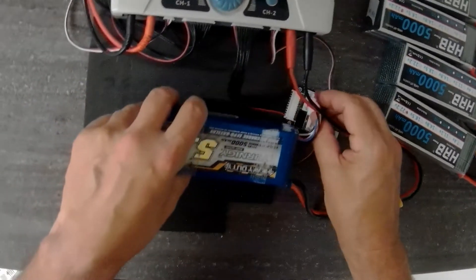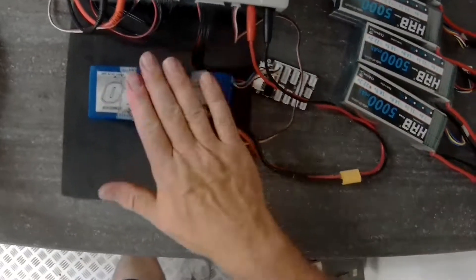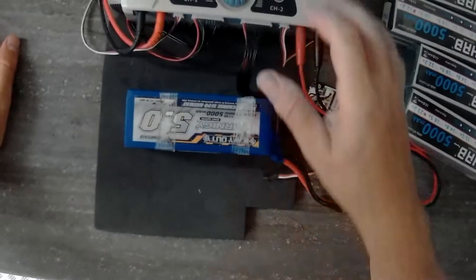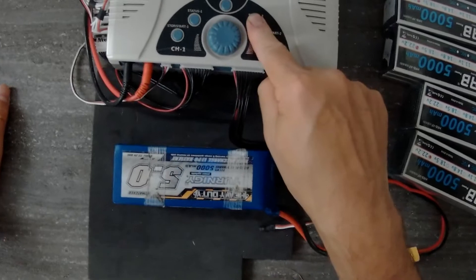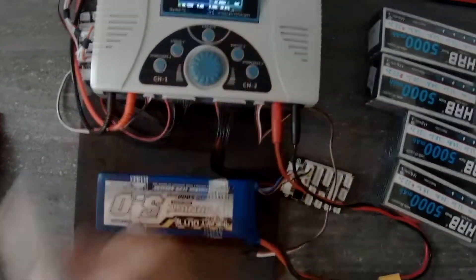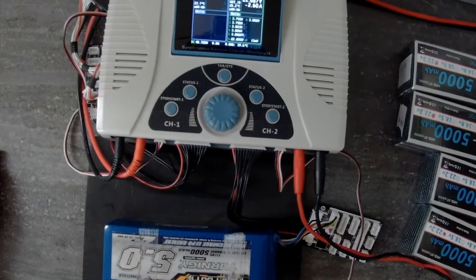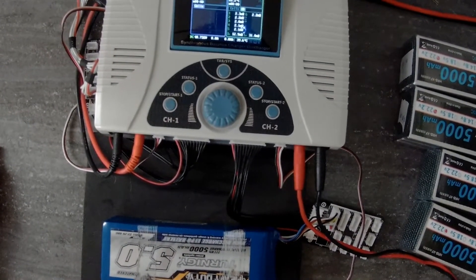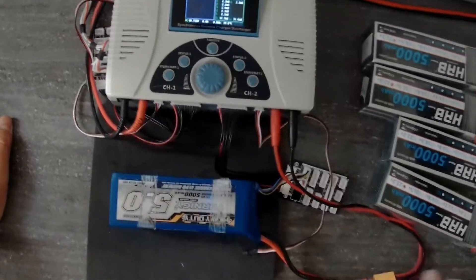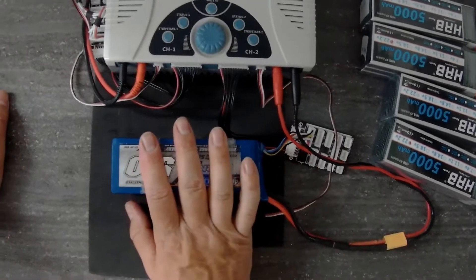Just as a comparison, this is a Turnigy. That's a year old with quite a few cycles. It's not a fancy battery, it's just a Turnigy heavy duty. Okay, so the lowest is 2 and the highest is 2.3. So that's less than half the internal resistance of even the best of the HRBs.